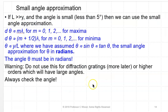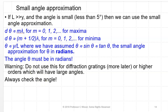Most of the time L is much greater than y — you always put the screen pretty far away from the slits. So the angle will be small, less than 5 degrees. If that's the case, you can use the small angle approximation. D theta is then approximately equal to m lambda for m equals 0, 1, 2 — that's for the maxima. The minima are d theta approximately equals m plus one half times lambda for m equals 0, 1, 2. And theta approximately equals y over L. We assume sine theta equals tan theta equals theta, and theta must be in radians. Do not use this for diffraction gratings or for higher orders which will have large angles. Always check that the angle is smaller than 5 degrees.